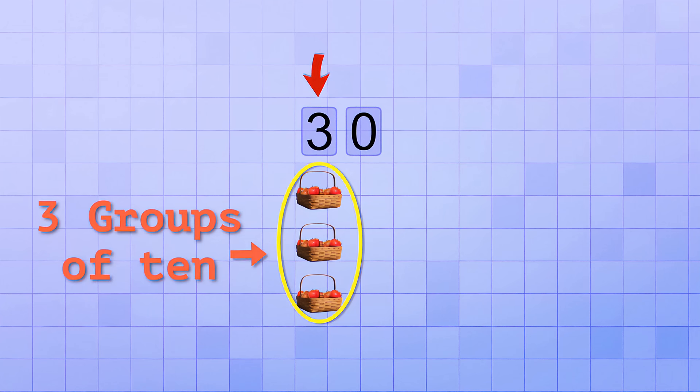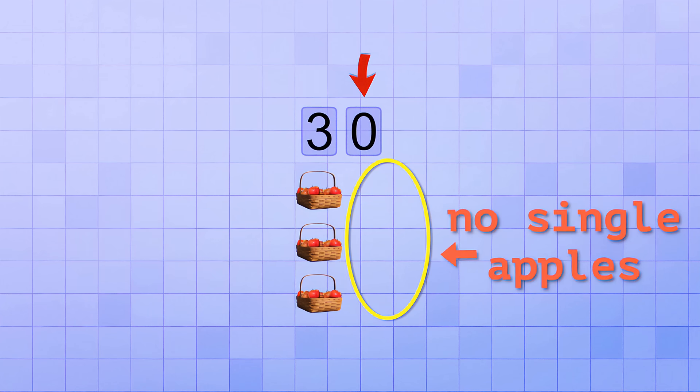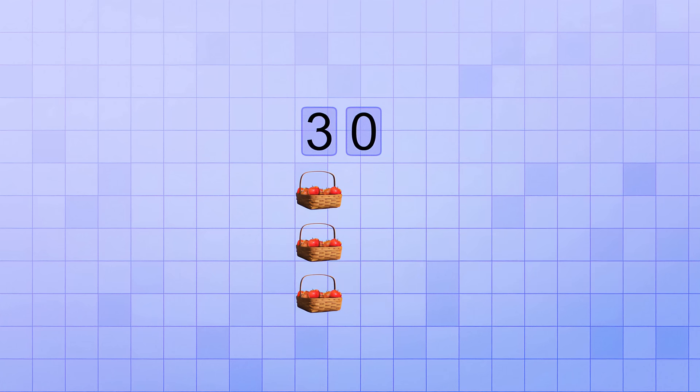For example, if we've already picked 30 apples, then there'll be a 3 in the tens place, and a 2 in the ones place to represent the two individual apples that are not in the groups of 10.